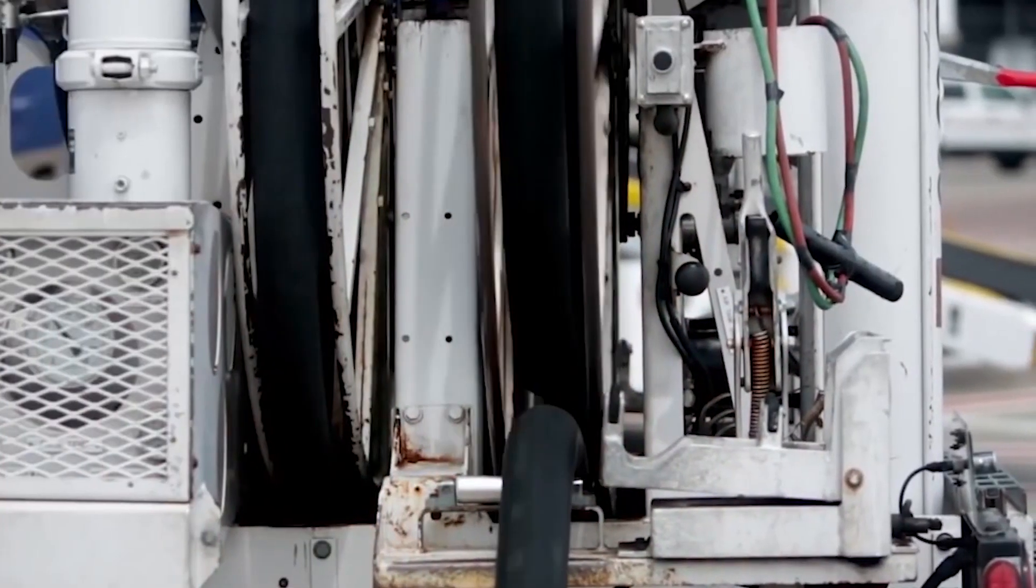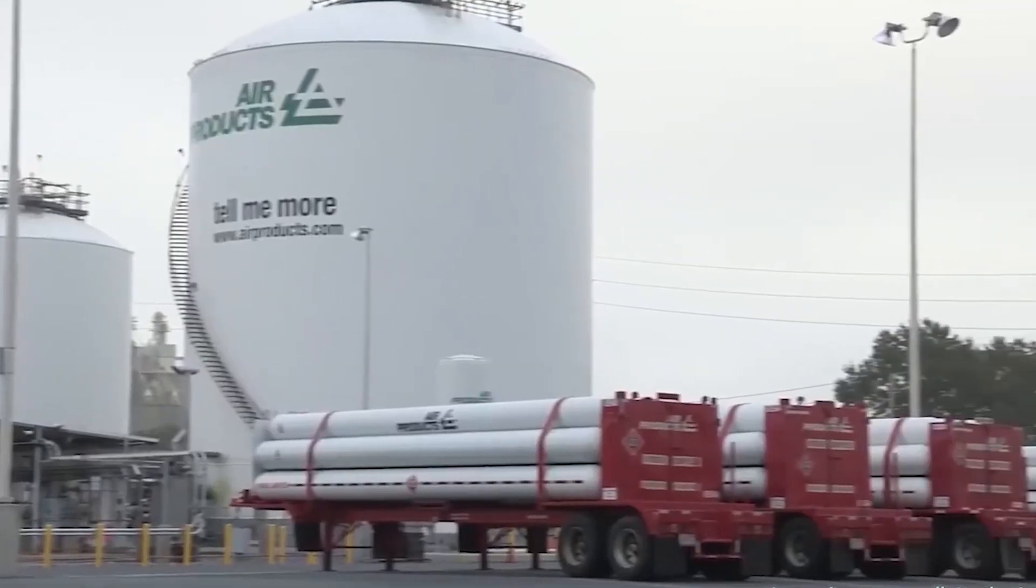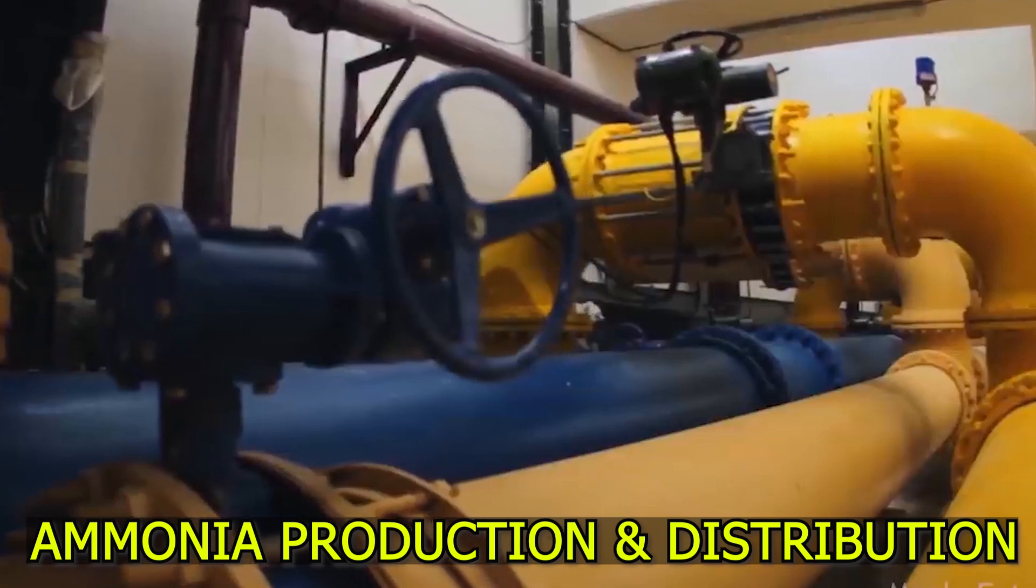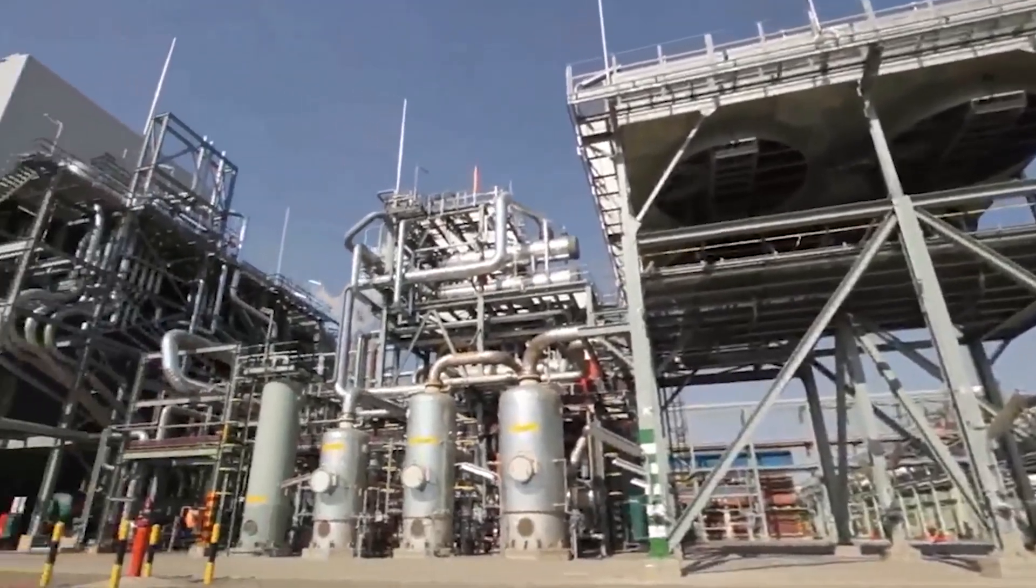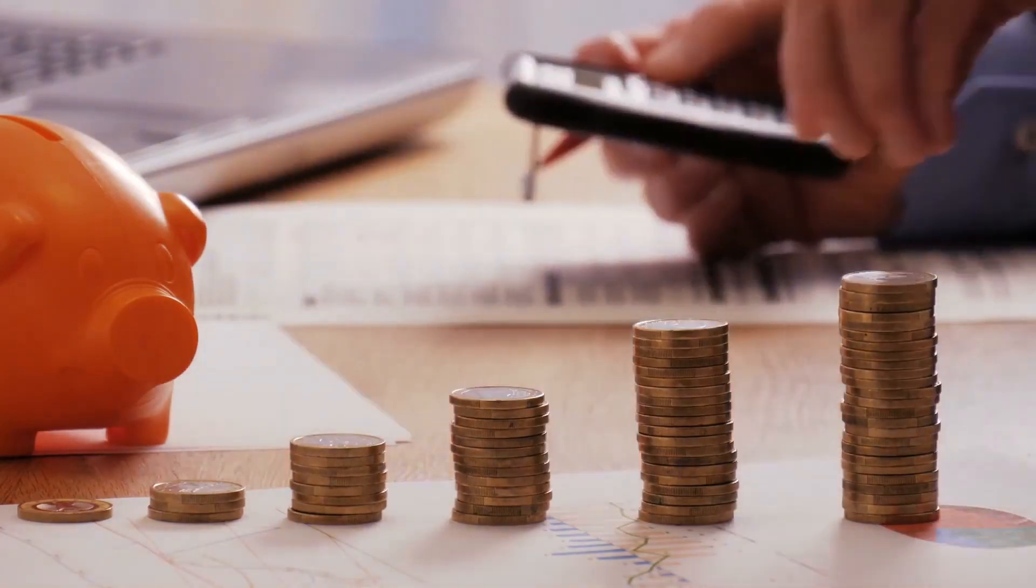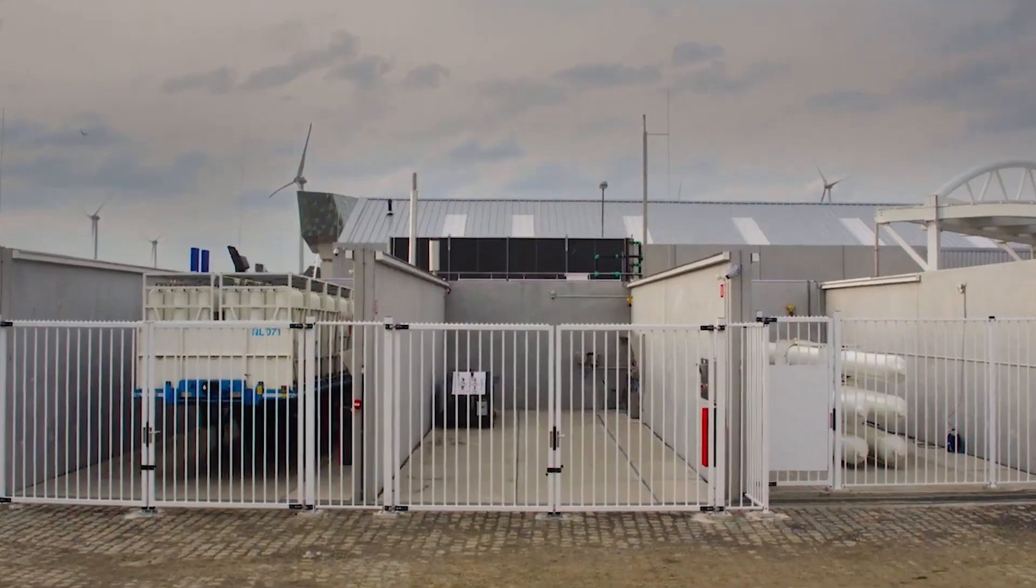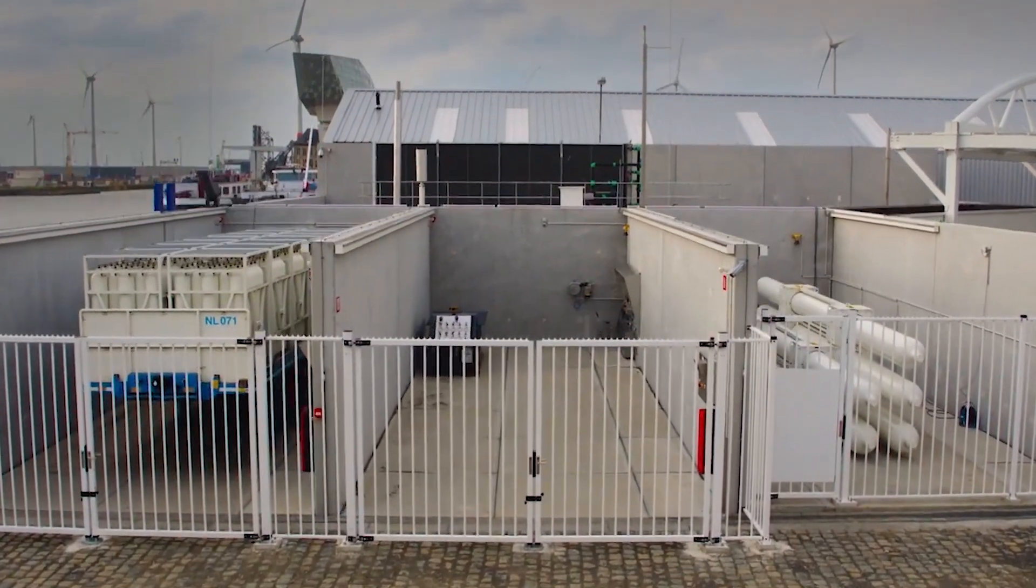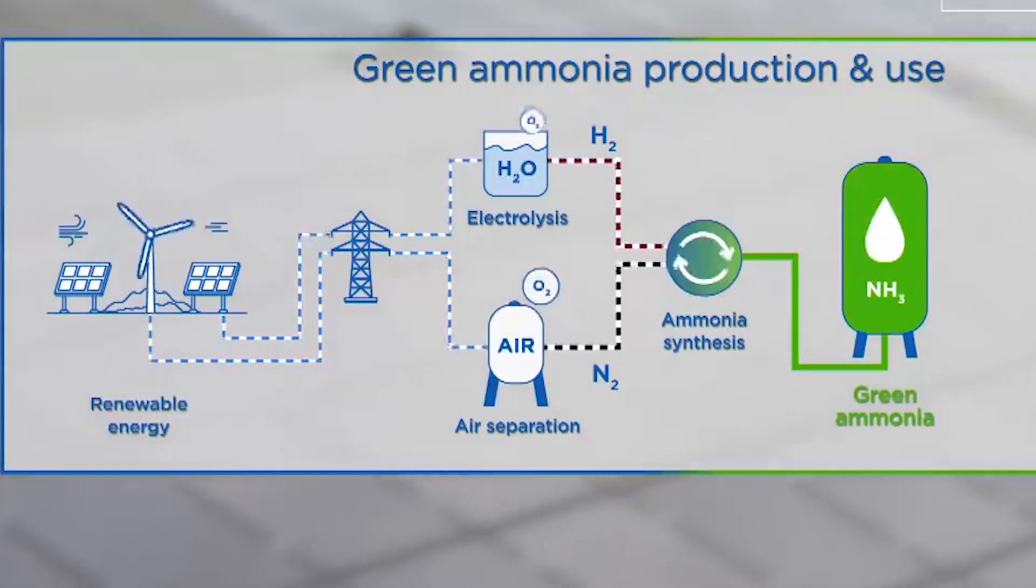Another significant challenge we face is the cost and availability of ammonia as a mainstream automotive fuel. As of now, ammonia production and distribution lack the extensive infrastructure and cost-effectiveness of conventional fuels. But rest assured, the industry is dedicated to making substantial investments in infrastructure development. From ammonia production facilities to distribution networks and refuelling stations, we're paving the way for a seamless transition to ammonia-powered transportation.